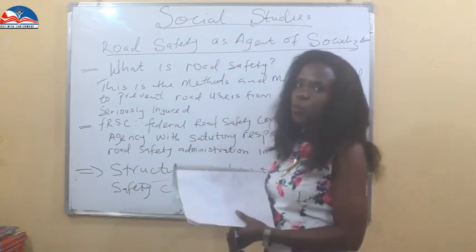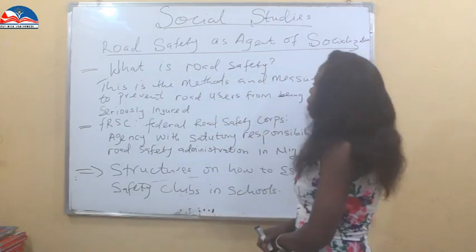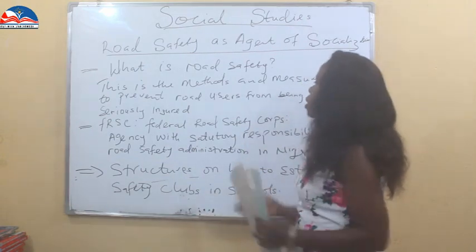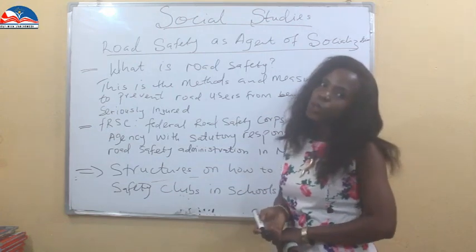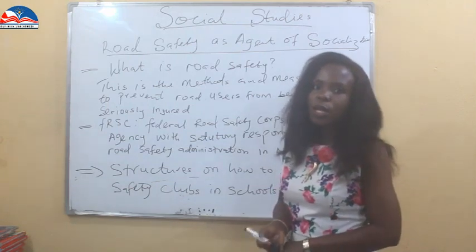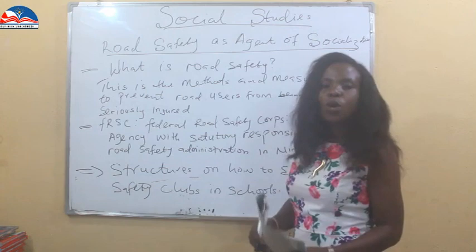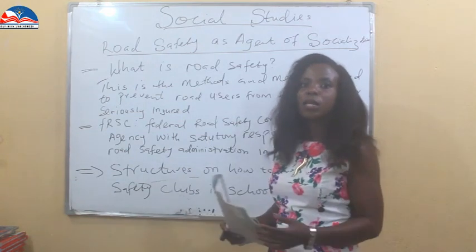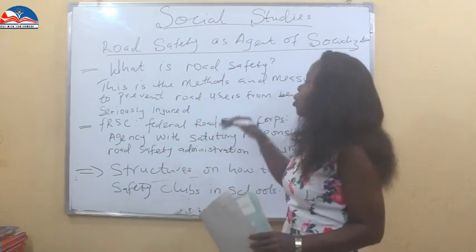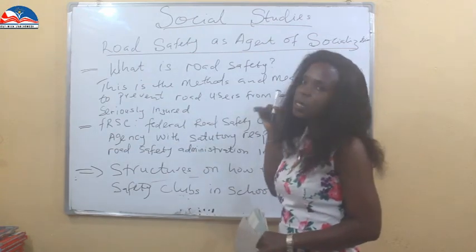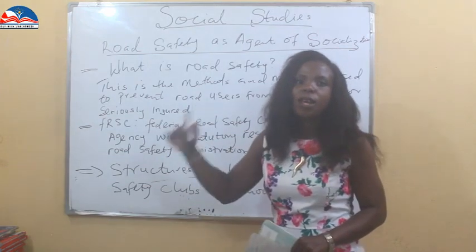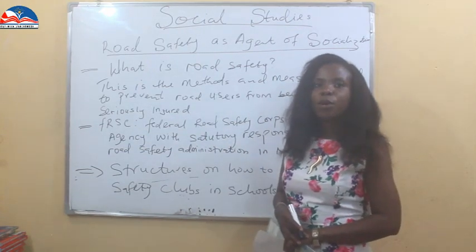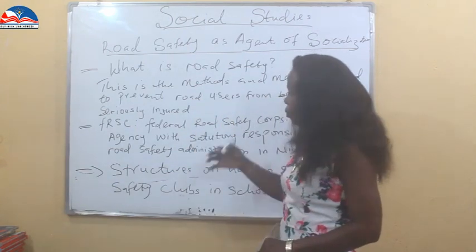What is road safety? Road safety refers to the methods and measures used to prevent road users from being killed or seriously injured. There are modalities and road codes put in place to help road users know the right way to go. There are many things that need to be done for injuries and accidents to be minimized — that is what road safety is: making sure road users are kept safe from accidents.